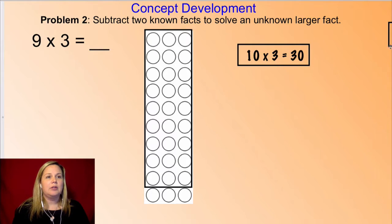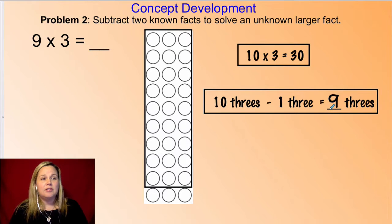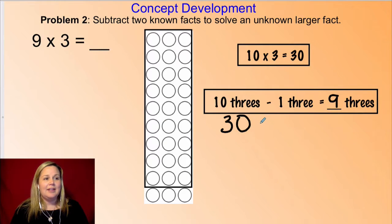Yeah, one three, right? So 10 threes minus one three equals nine threes, because I'm left with just the nine. So to solve this problem, I have 10 x 3, which is 10 x 3 gives me 30. And then I'm subtracting one three, which is three. So 30 - 3 is going to give me 27. So 9 x 3 = 27.